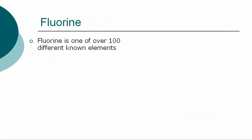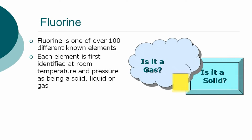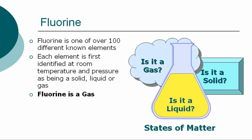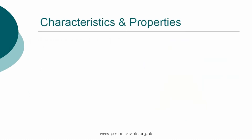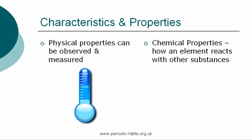The element fluorine is one of over 100 different chemical elements known to modern chemistry. Each element is first identified at room temperature and pressure as being a solid, liquid, or gas, referred to as states of matter. Each element has physical properties that can be observed and measured, such as color, density, and odor. The chemical properties are the characteristics that determine how a substance will react with other substances, such as water or oxygen.